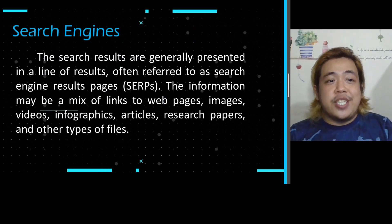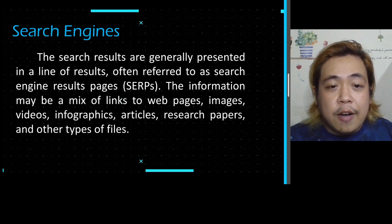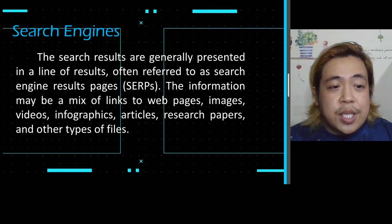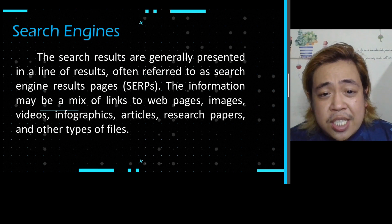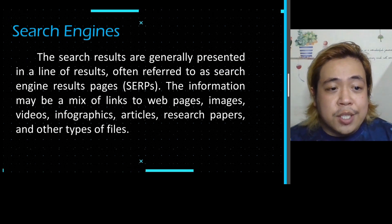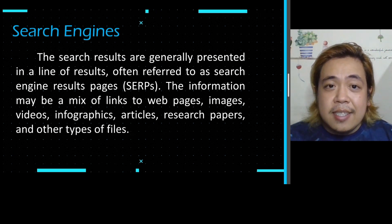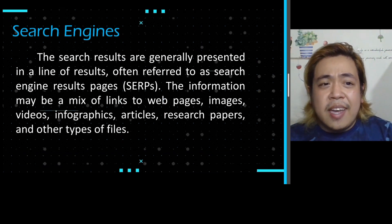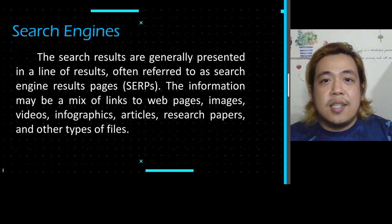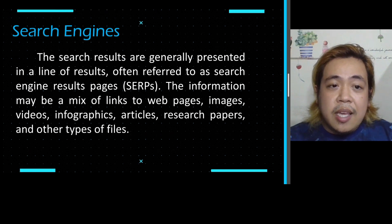Next, we have search engines. Search engine results are generally presented in a line of results, often referred to as search engine result pages or SERPs. The information may be a mix of links to webpages, images, videos, infographics, articles, research papers, and other types of files. This is where we go when we search — we even use 'Google' as a verb now, saying 'Google it,' as it is the most well-known search engine for locating and finding information.